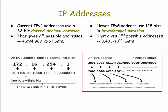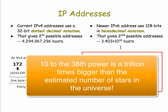So IPv6 is moving to a 128-bit address, and it represents it in hexadecimal notation as shown here. In this example, you can see there are 8 parts. Each part is a four-digit hexadecimal number, which corresponds to 16 bits. So 16 times 8 gives you 128 bits. With 128 bits, you can make 2 to the 128 possible IP addresses — an enormous number. So we won't be running out of IP addresses anytime soon, if ever.